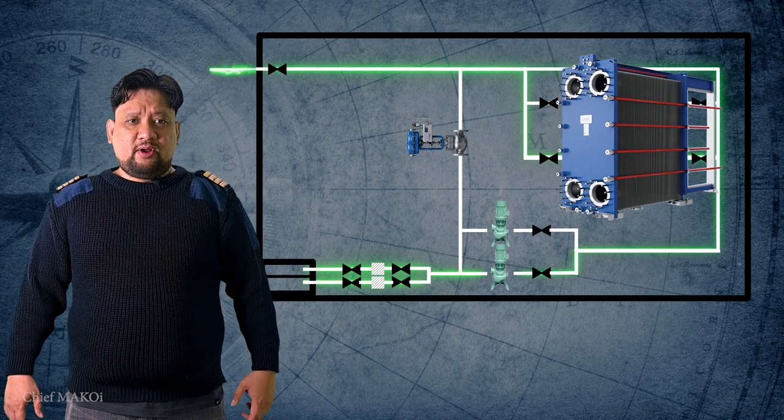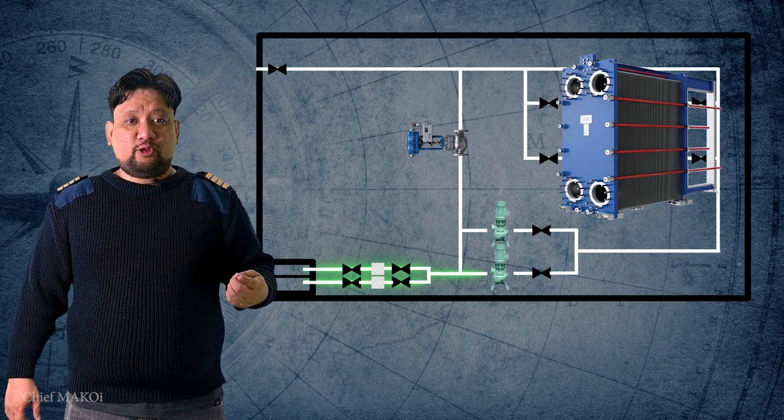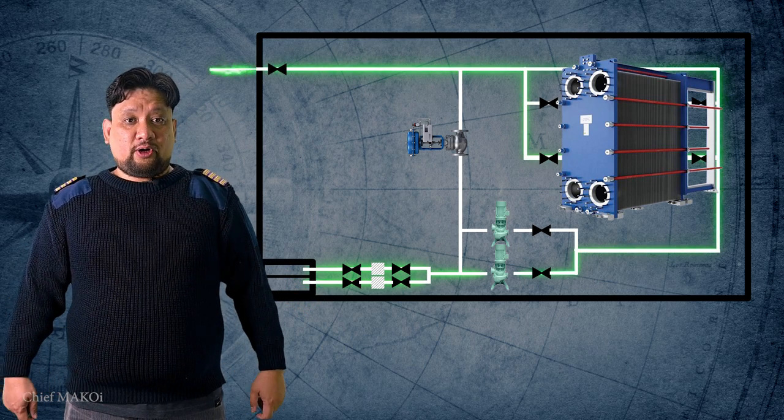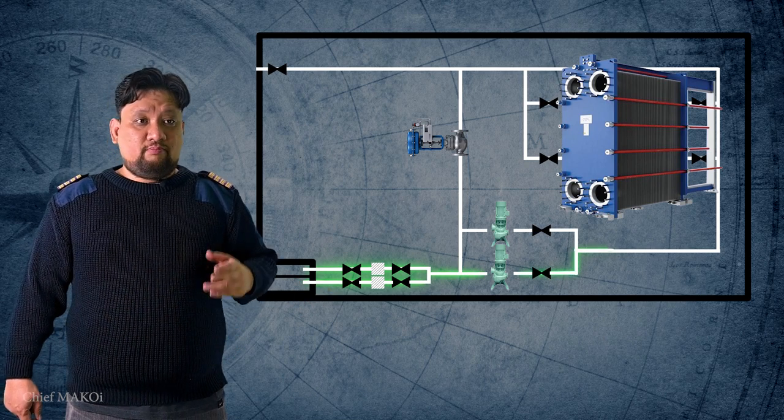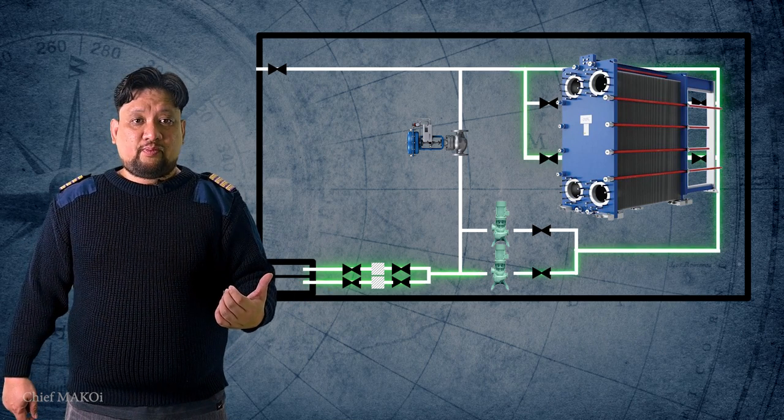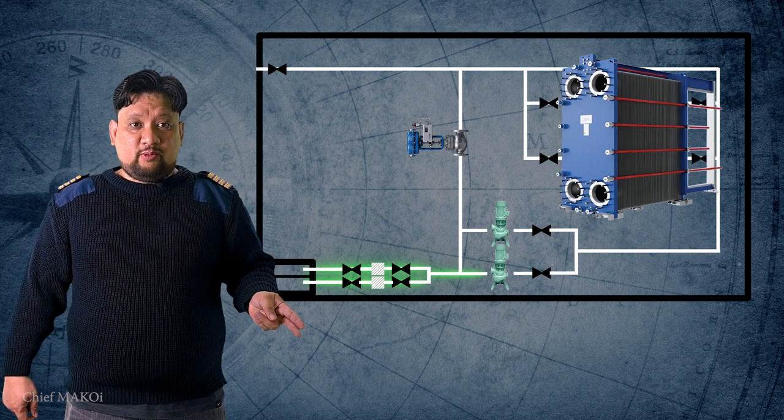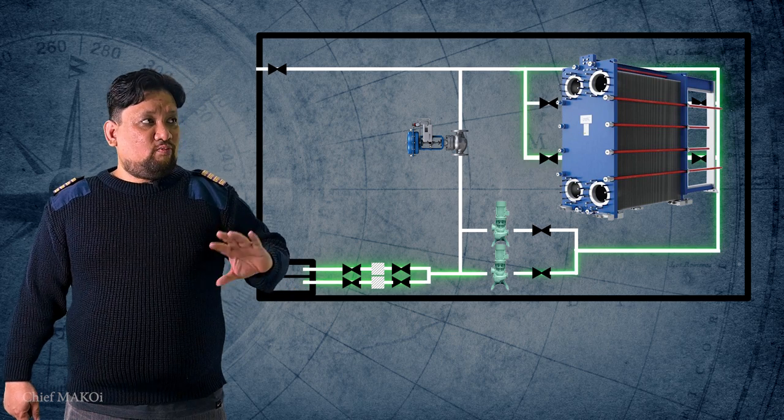In this type of system, fresh water running in a closed circuit is the medium that goes through all the other heat exchangers. And this fresh water, after absorbing all the heat from the various systems, passes through the central cooler where it will transfer all of the heat to the seawater, which then exits the system and goes back out to the sea.